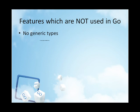Why does Go not have exceptions? The developers of Go believe that coupling exceptions to a control structure, as in the try-catch family idiom, results in convoluted code. It also tends to encourage programmers to label too many ordinary errors, such as failing to open a file, as exceptions.